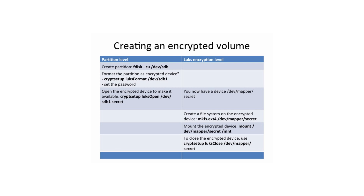In this slide you can see a summary of the different tasks that need to be accomplished. First, on the partition level, you need to create a partition. Next, you will need to format the partition as an encrypted device — the command to use is cryptsetup luksformat /dev/sdb1, for example. When formatting the encrypted device, you also need to set an encryption password, which will be needed later to open the encrypted device.